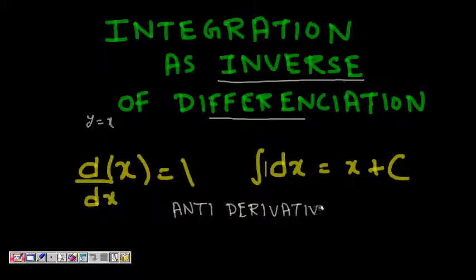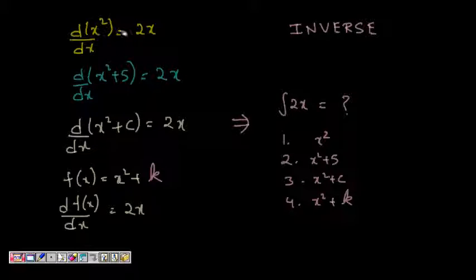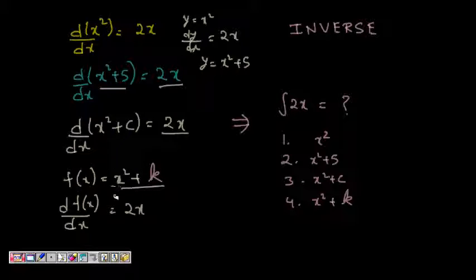We know that d/dx of x² is 2x. Similarly, d/dx of x² + 5 is also 2x. And d/dx of x² + c is also 2x, where c is some constant. Likewise, if f(x) = x² + k where k is another constant, dy/dx is still 2x.